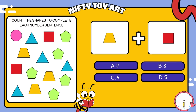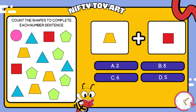I have a trapezoid plus square. How many all together? That's right, five.